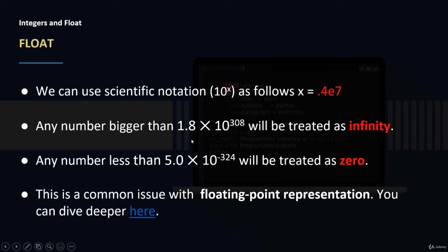This problem can happen if, for example, we have a code where we are multiplying numbers together and the result gets bigger and bigger until we have a number bigger than this. This will result in nan or infinity. And any number less than 5.0 × 10^-324 will be treated as zero in Python.